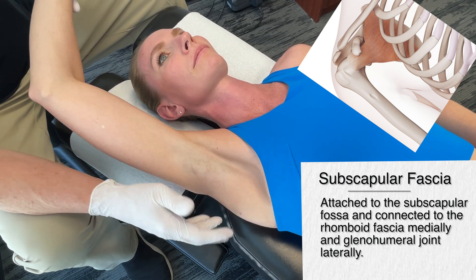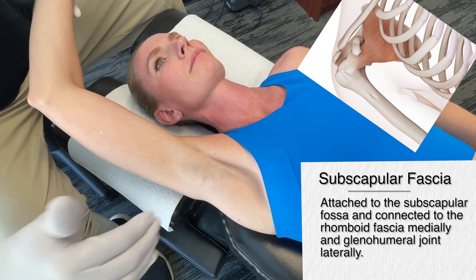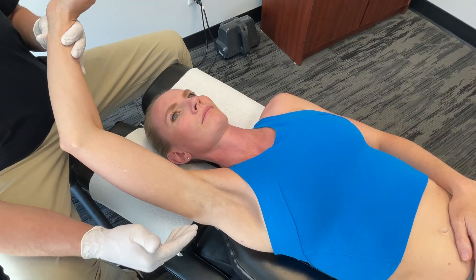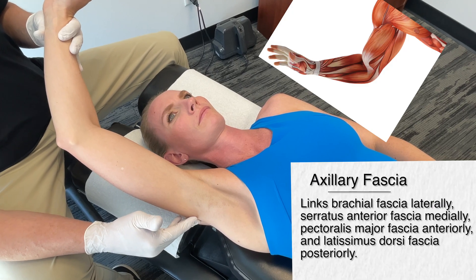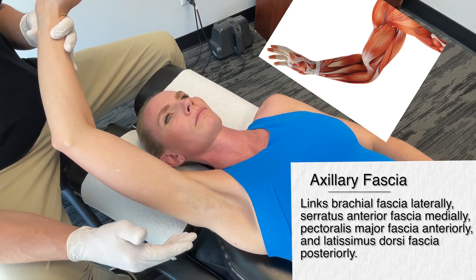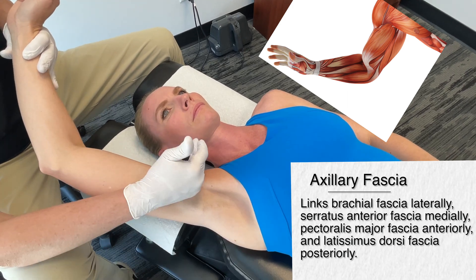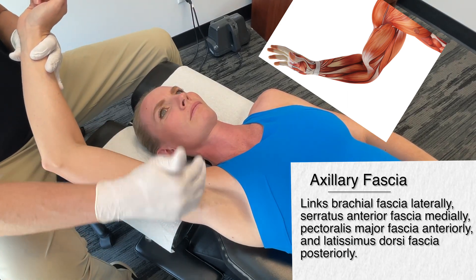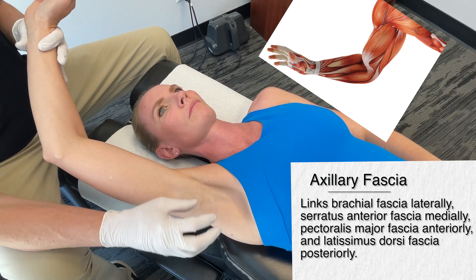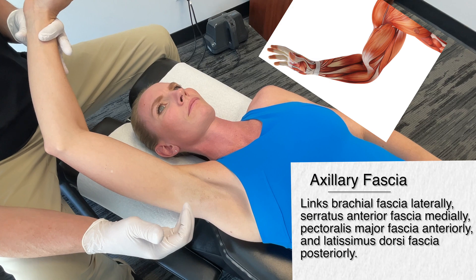So we have the deltoid, the pectoral, and the subscapular fascia connecting right into the mid-back. The next area that interconnects for the shoulder is the axillary fascia — a strong quadrilateral tissue that links to the brachial fascia. We take anatomy and think that one structure is independent from another, but in reality they're all connected.